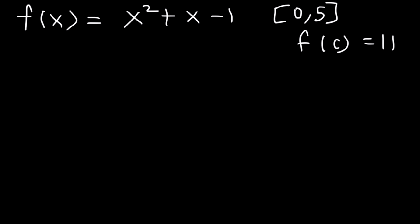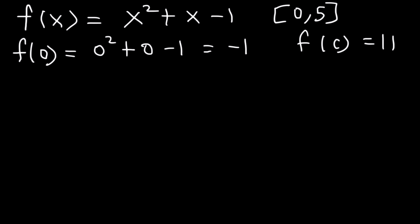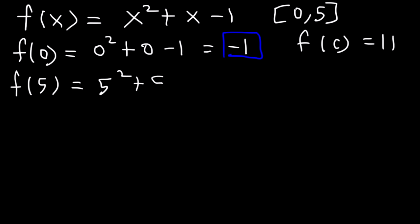So first, we've got to make sure it applies to the interval, so we've got to find f of a and f of b. So f of zero is zero squared plus zero minus one, which is negative one — that's f of a. f of b, which is the same as f of five, is going to be five squared plus five minus one. Five squared is 25 plus five, that's 30, minus one, that's 29. So that's the value of f of b.